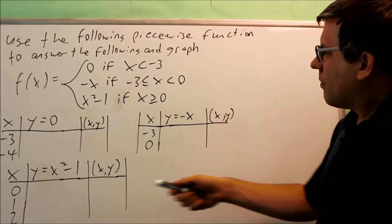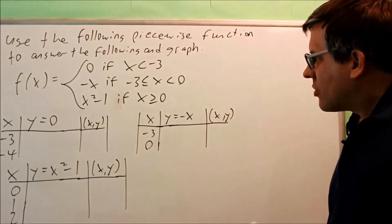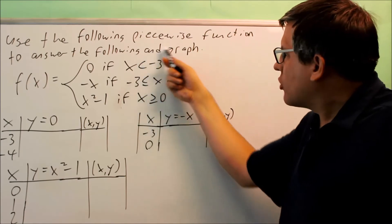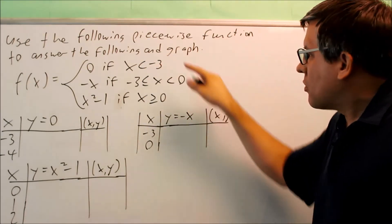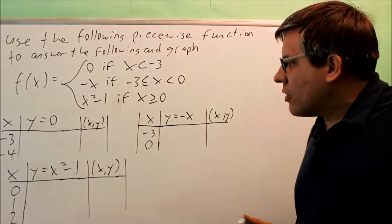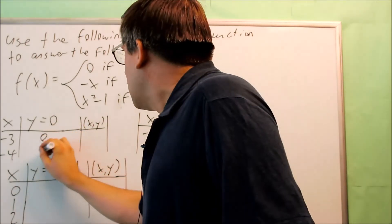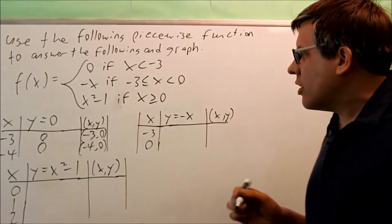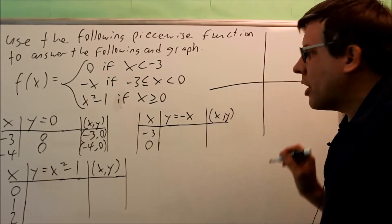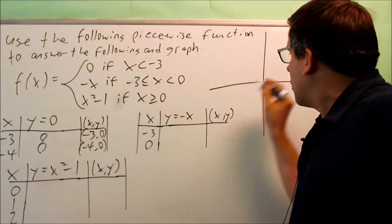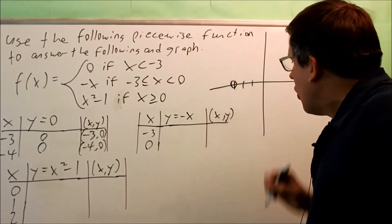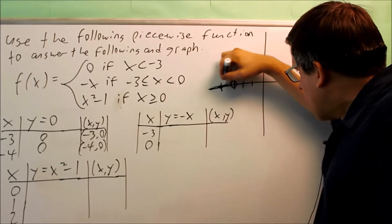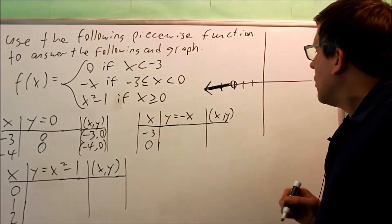Now let's graph this. I've created three tables. The first piece is y equals zero when x is less than negative three. I'll start by using the boundary value negative three, which gives the point (negative three, zero), and also (negative four, zero). Since negative three was not originally included in this condition, I place an open circle at that point, and the line goes to the left from there.